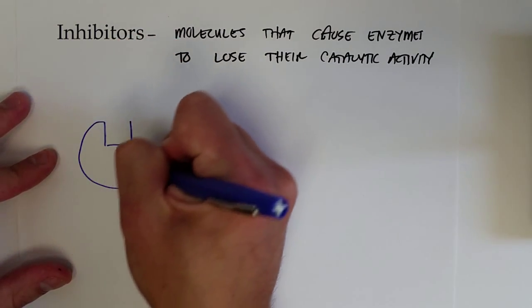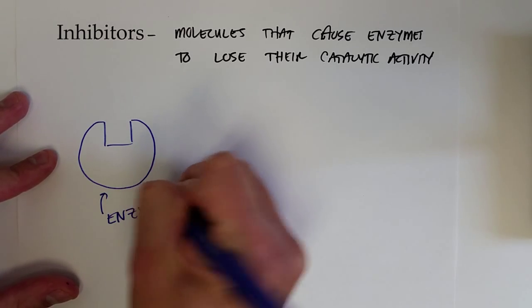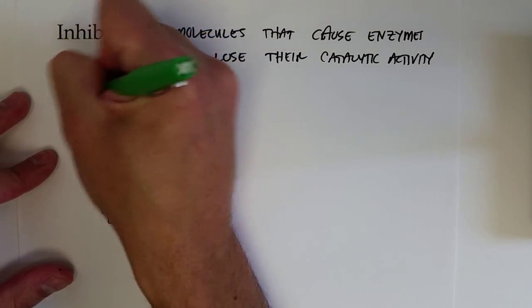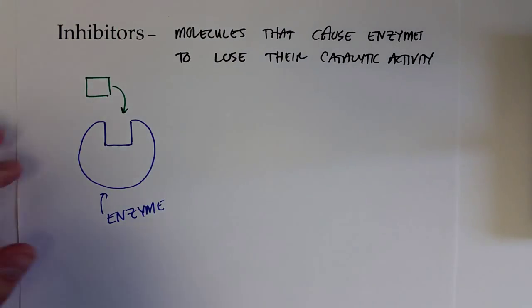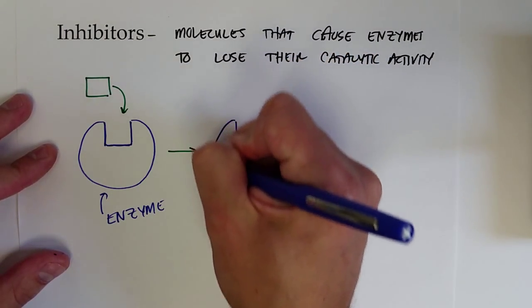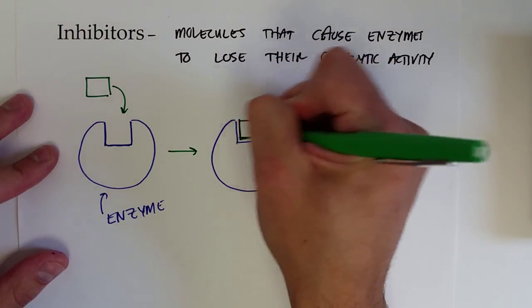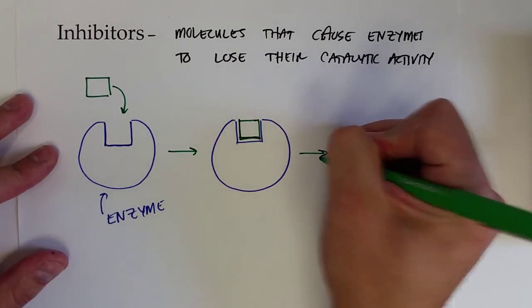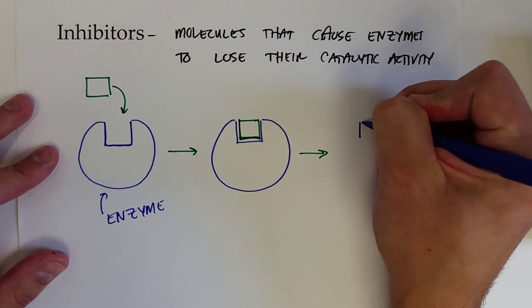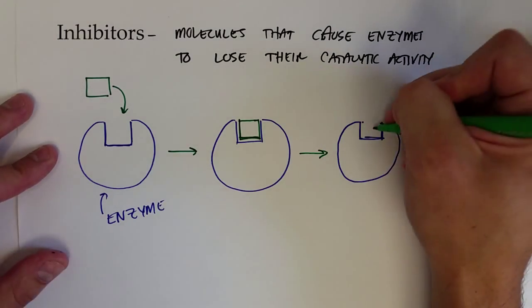Let's say we have an enzyme with an active site, and the substrate has the very same shape, so it can bind there. If everything is perfect, the enzyme will form a complex with the substrate, and then after some amount of time the substrate will be converted into products.